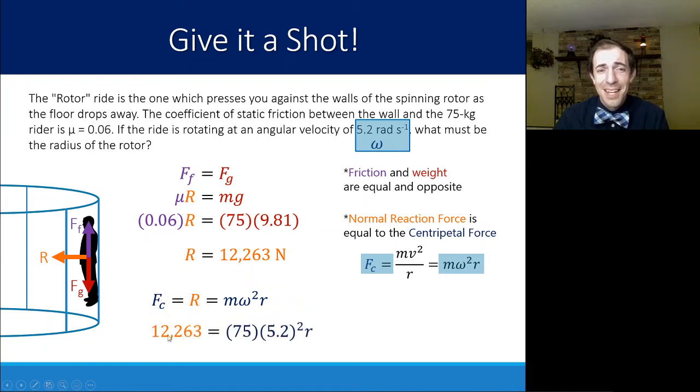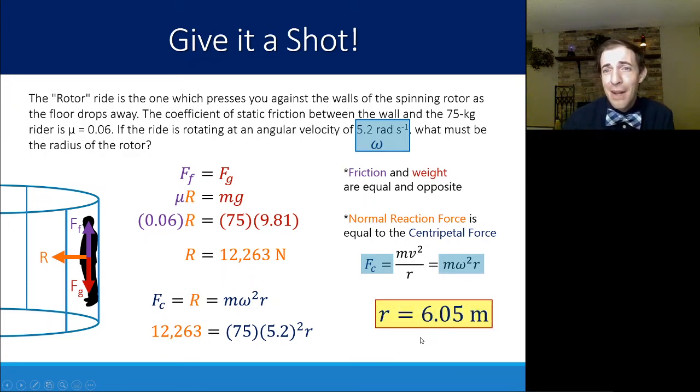So plugging in the values, really the only one that we don't know is R. So solving that through, we can find that the radius of this thing is about 6.5 meters. It has a pretty big rotor, to be totally honest. And the reason it had to be that big for this particular angular velocity is because it was a very low coefficient of friction.